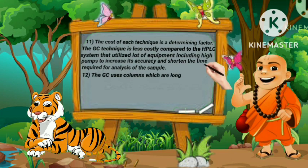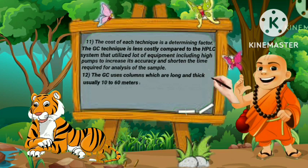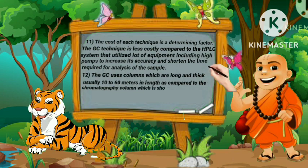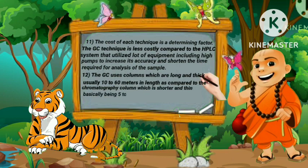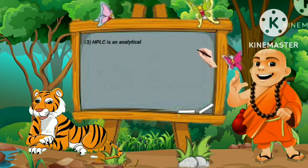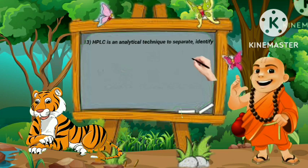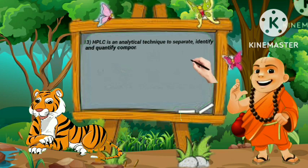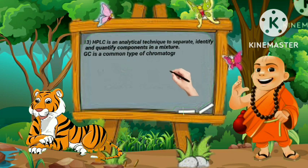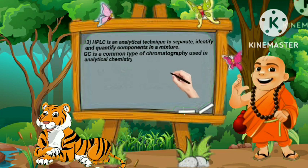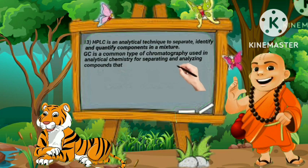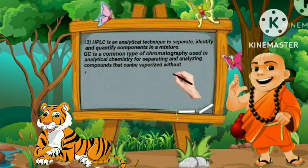GC uses columns which are long and thick, usually 10 to 60 meters in length, compared to the HPLC chromatography column which is shorter and thinner, basically 5 to 30 cm in length. HPLC is an analytical technique used to separate, identify, and quantify components in a mixture. GC is a common type of chromatography used in analytical chemistry for separating and analyzing compounds that can be vaporized without decomposition.